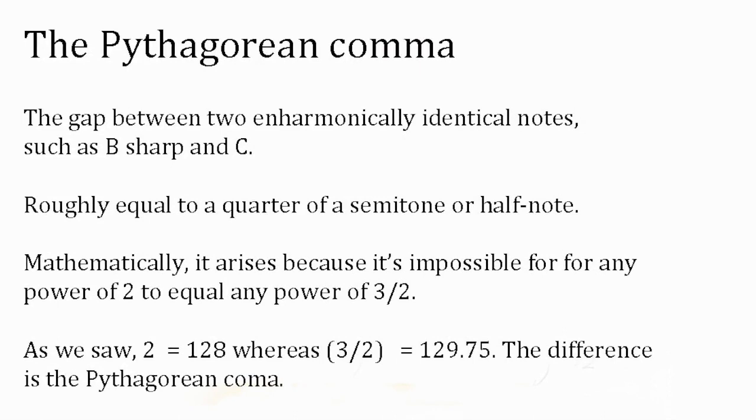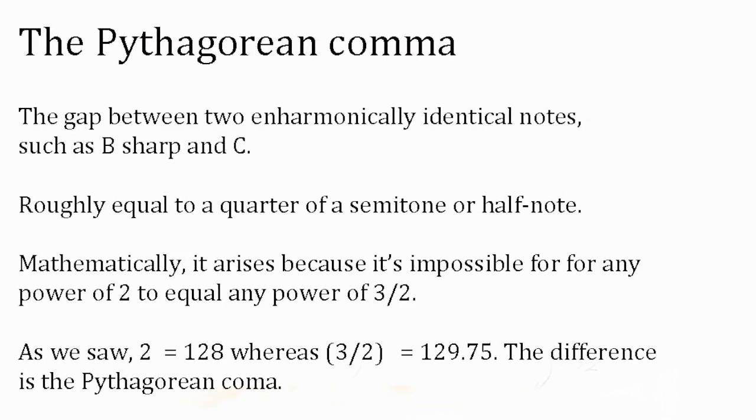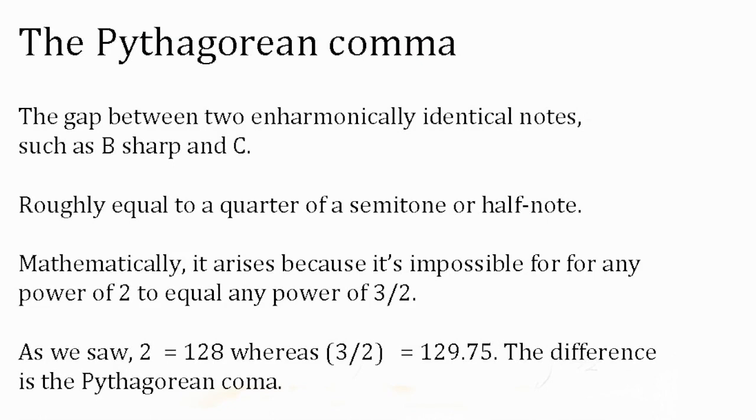One of the things you can't do in Pythagorean tuning, but you can in equal temperament, is complete what's known as the circle of fifths. But that's the topic of the next video on the maths of music. So thanks for watching, stay tuned, and I'll see you next time.